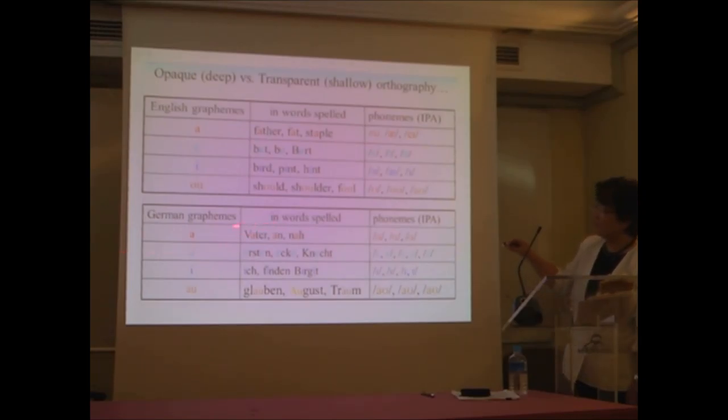In German, the transparent is one-to-one. It's pretty transparent. 'Vater, ah,' phonemes. 'Ersten, Ecke, Kenne,' it's very constant. So the alphabetic principle is perfectly observed. 'If, Hinde, Bege, Graben, August, Thron.' So here's the difference between English and German: opaque, transparent; deep orthography, shallow orthography.